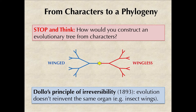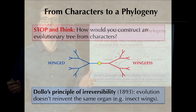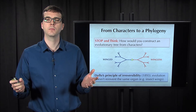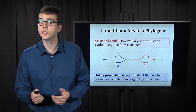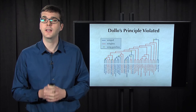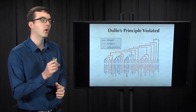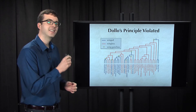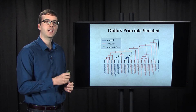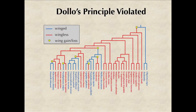What this principle states is that evolution is efficient — it doesn't reinvent the same organ over and over again, such as insect wings. Yet when we construct the stick insect phylogeny, we see that wings were gained or lost at seven different times in stick insects alone, shown here by stars.